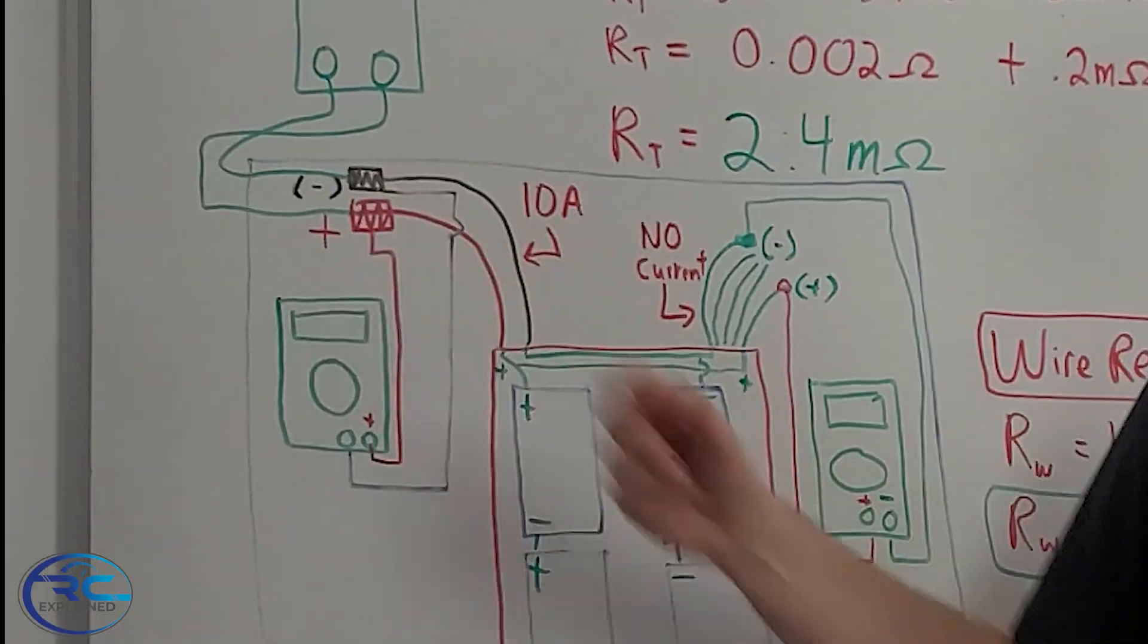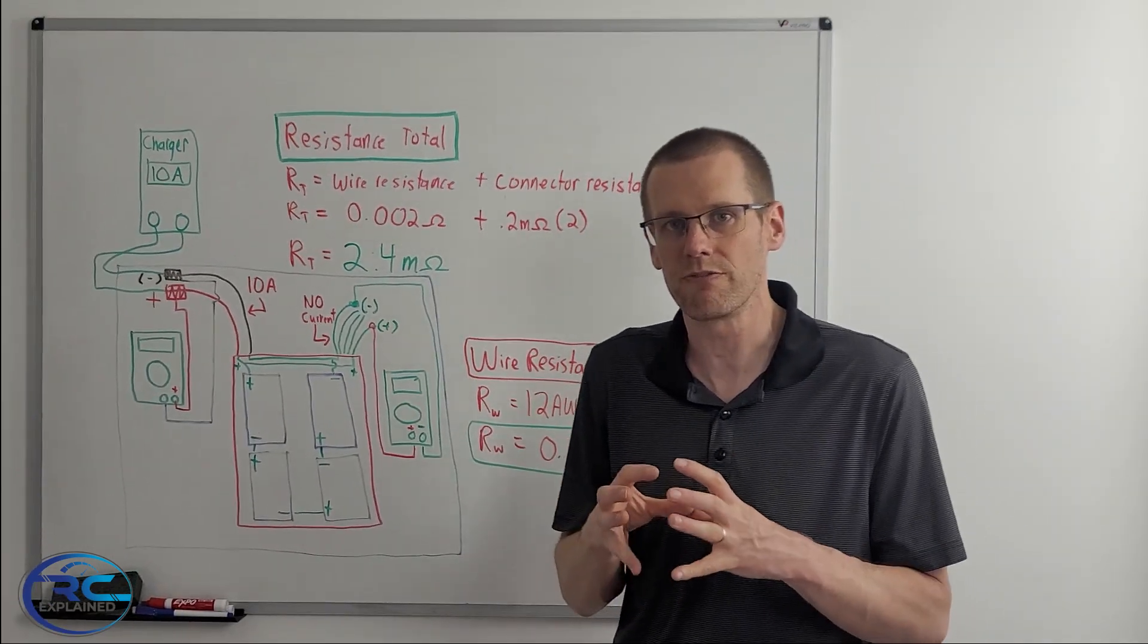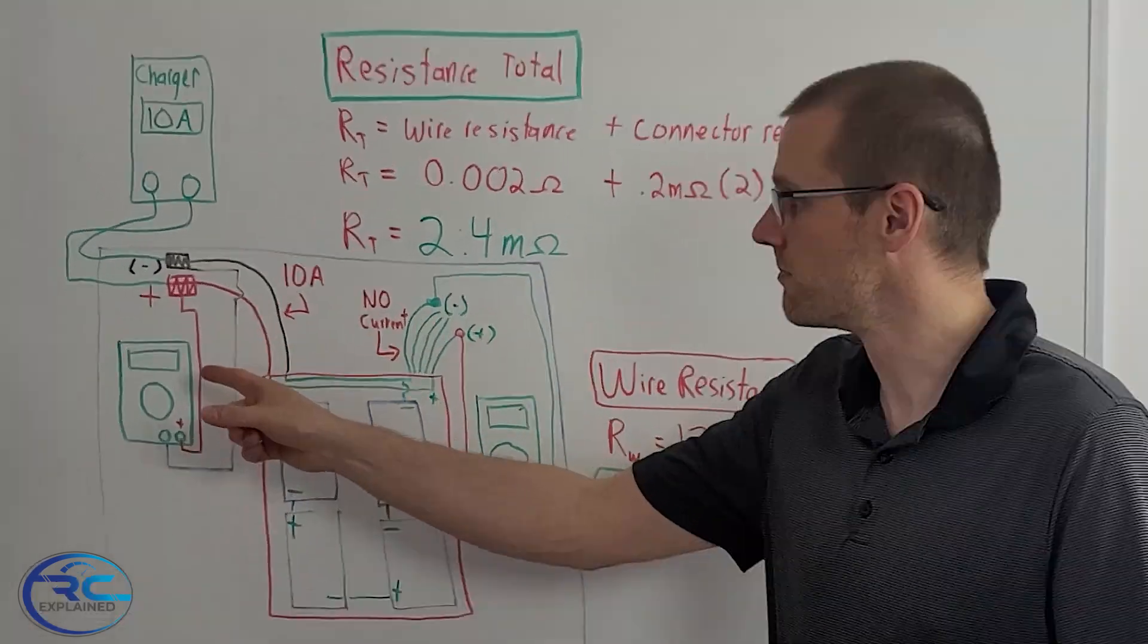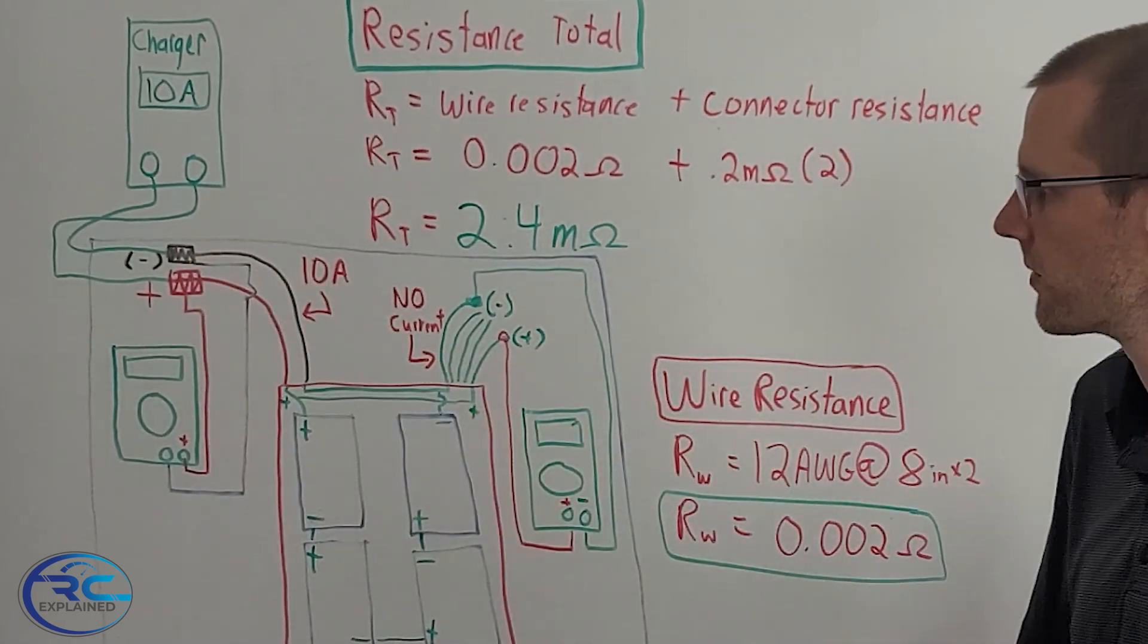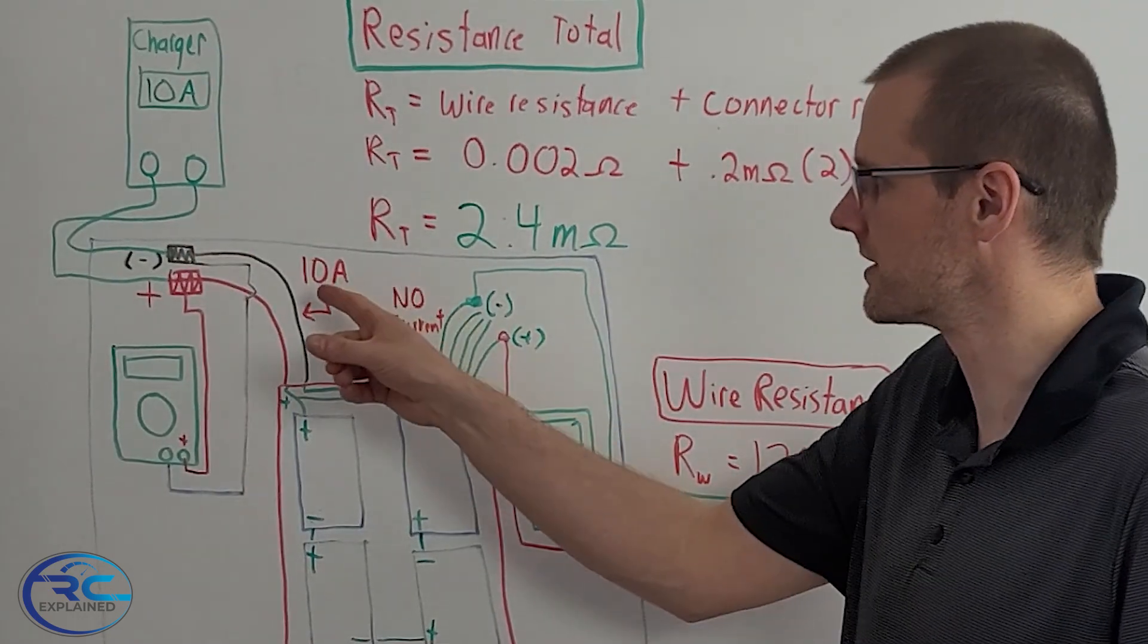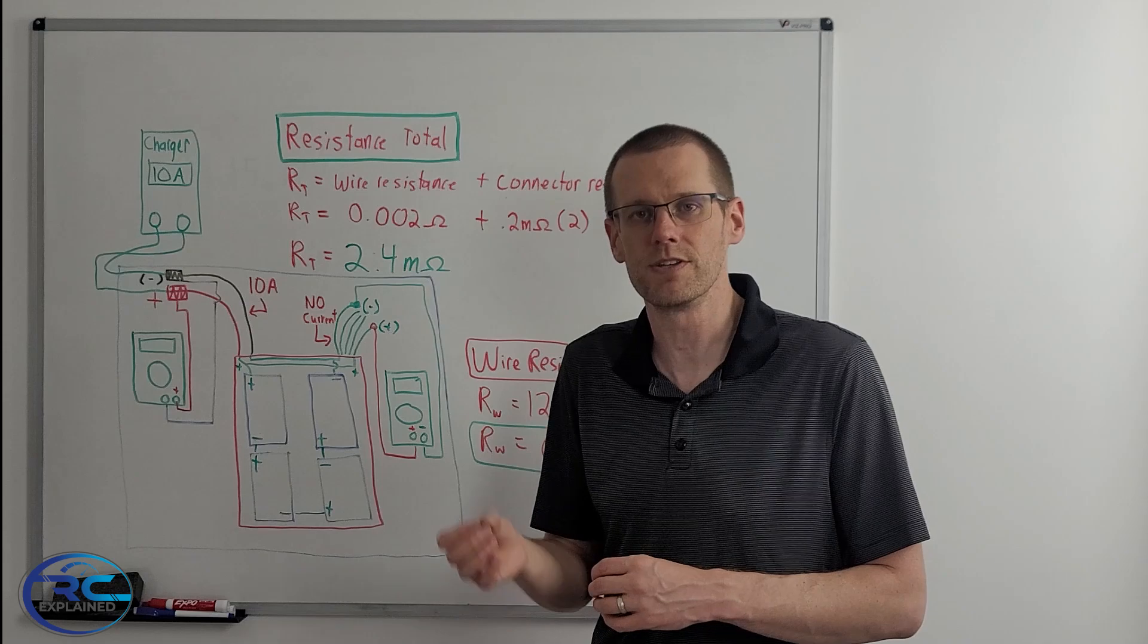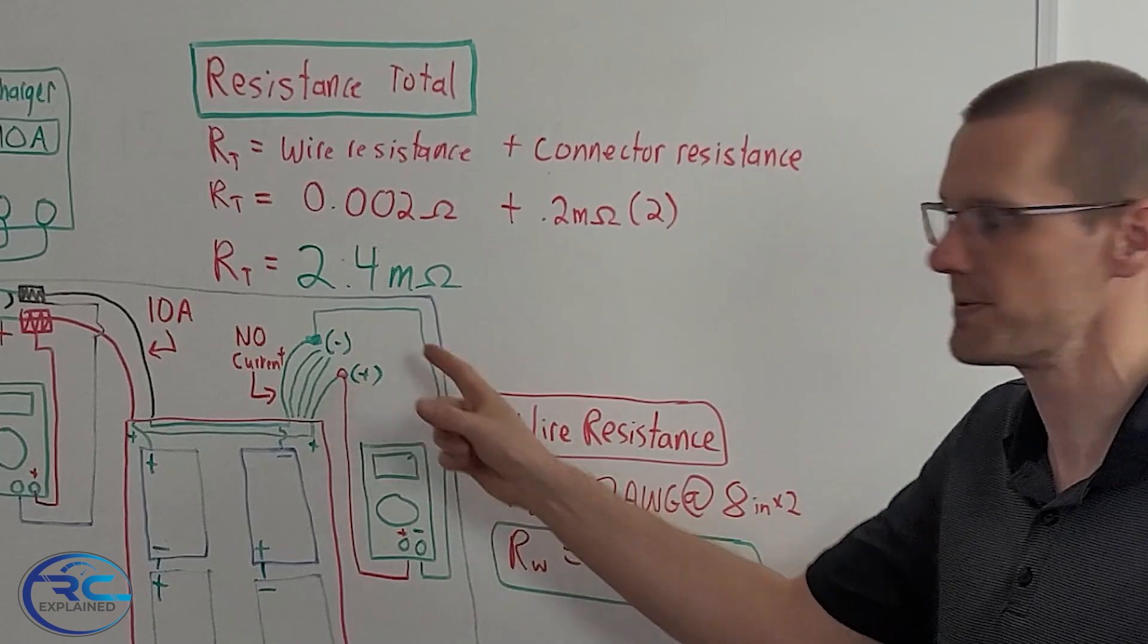We got our set of main leads that comes out and on the other side here we got our balance tab and both of those are very important because we're going to be needing two multimeters to measure voltage on both sides. On this side we're going to have our multimeter directly connected to the connectors that are located right where we see them here and that's the AS150s that we're going to be using today. We're going to be using a charge rate of 10 amps in order to bump that charge rate up to a significant amount so we can measure a difference in voltage.